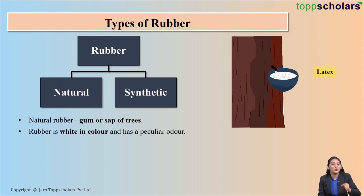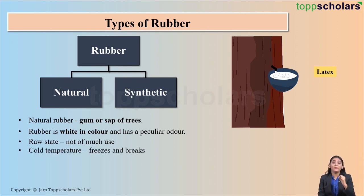This raw state of rubber is not of much use. But why is it so? This is because at cold temperature, rubber freezes and becomes brittle, and therefore it breaks easily. On the other hand, at high temperature, rubber melts down. So it is very important to convert this rubber into a more useful form.